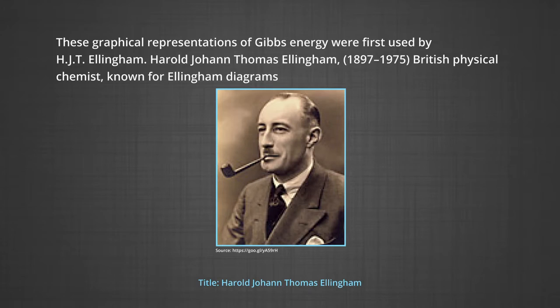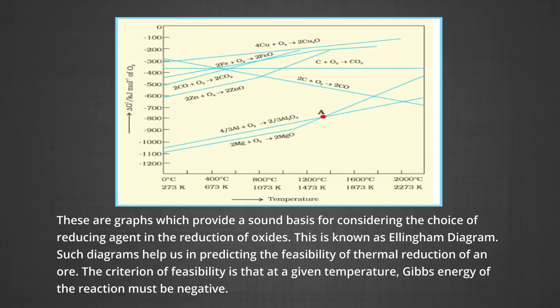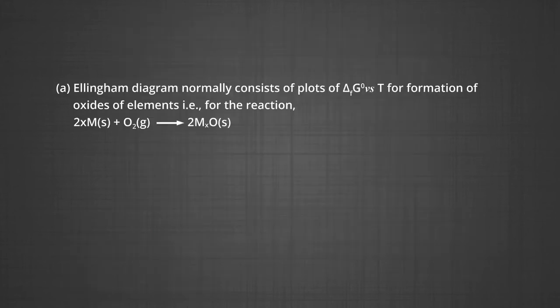These graphical representations of Gibbs energy were first used by H. J. T. Ellingham. These are graphs which provide a sound basis for considering the choice of reducing agent in the reduction of oxides. Such diagrams help us in predicting the feasibility of thermal reduction of an ore. The criterion of feasibility is that at a given temperature, the Gibbs energy of the reaction must be negative.